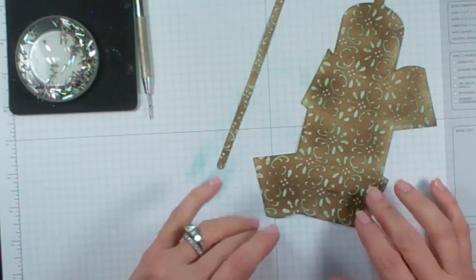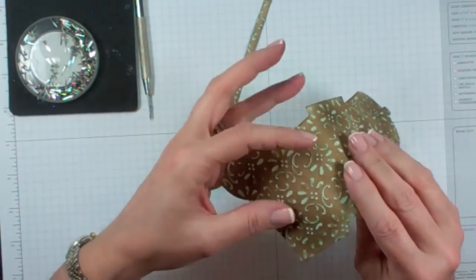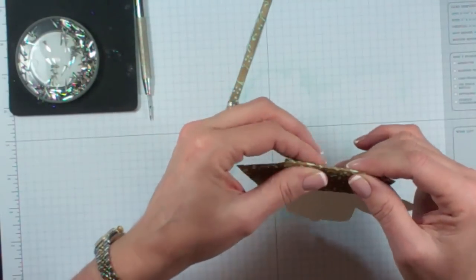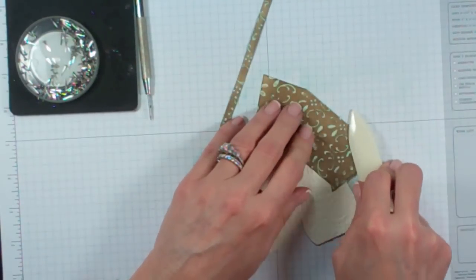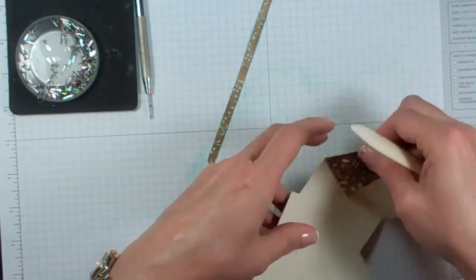Once you've done both the handle and the purse, you're going to then start to assemble it. I want to fold it on those score lines. I'm going to just gently press down with my bone folder just to make that score a little sharper.